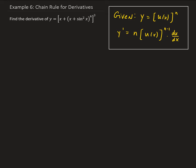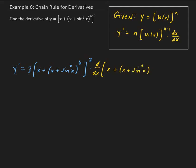So y prime equals — we're going to bring down the 3 first. So we have 3 times (x plus (x plus sine squared x) to the power of 6), and all that is going to be raised to the second power. Then we have to take the derivative of the inside part — the derivative with respect to x of (x plus (x plus sine squared x) all raised to the sixth power).